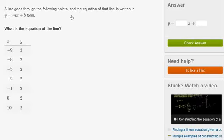A line goes through the following points, and the equation of that line is written in y equals mx plus b form, also known as slope-intercept form. What is the equation of the line?